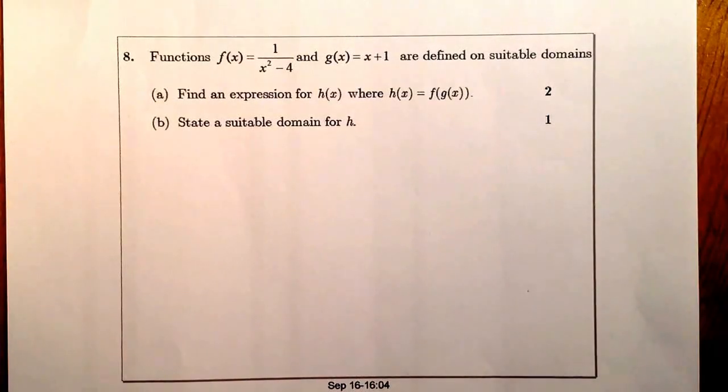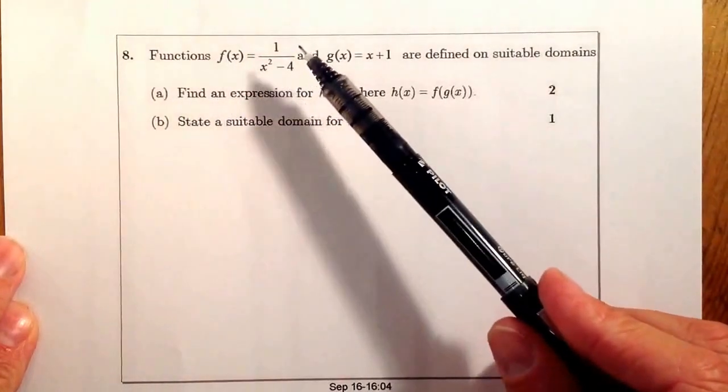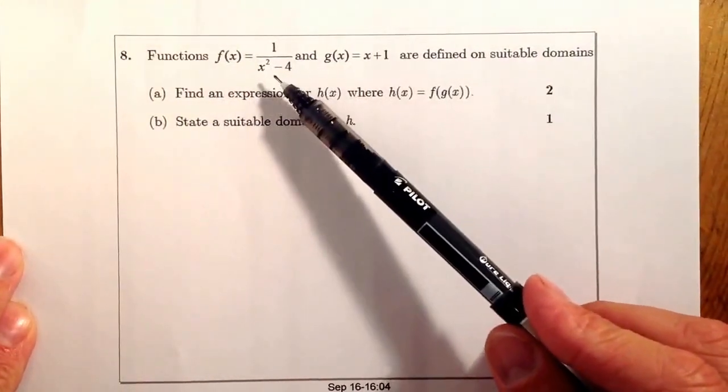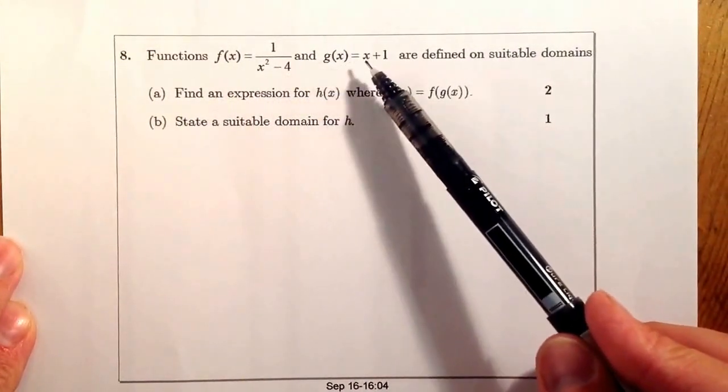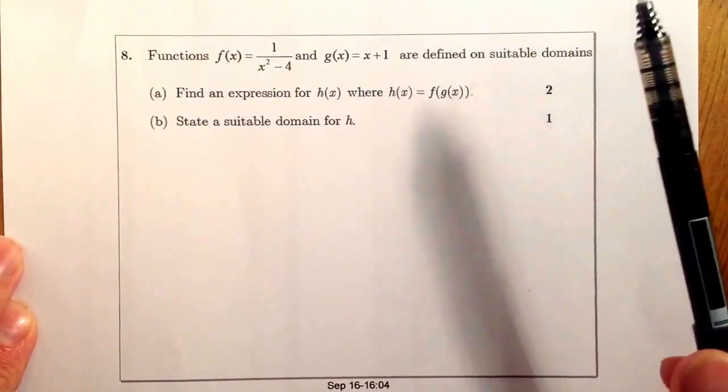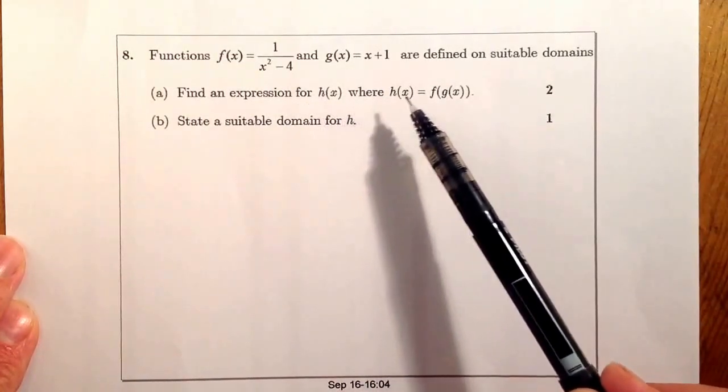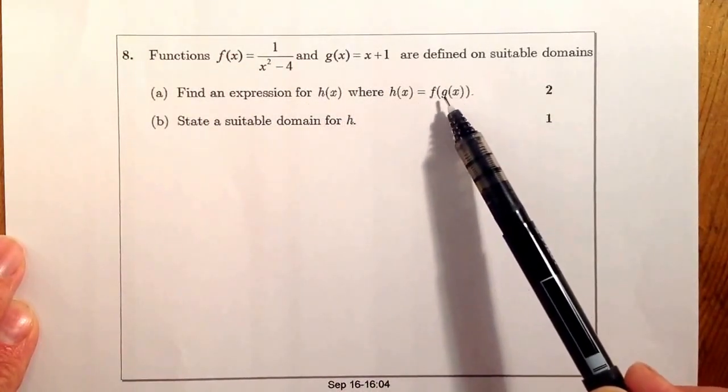This is Higher Homework 5 and we're looking at question 8. Functions f(x) equals 1 over x squared minus 4 and g(x) equals x plus 1 are defined on suitable domains. Find an expression for h(x) where h(x) equals f of g of x.